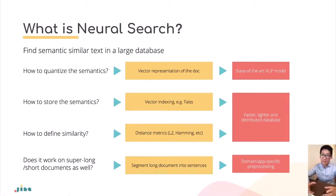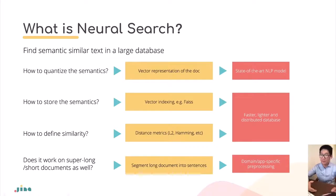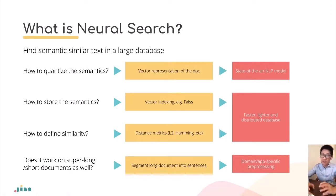The second problem is: once we have these bunches of vectors, how do we store and retrieve them efficiently? Facebook released an open-source software called FAISS (Facebook Semantic Search Index), and Microsoft also released a similar vector database. There are also open-source vector databases such as Annoy from Spotify and Milvus from Zilliz. These can be used to store vectors in a very efficient way, so the second problem is also checked.